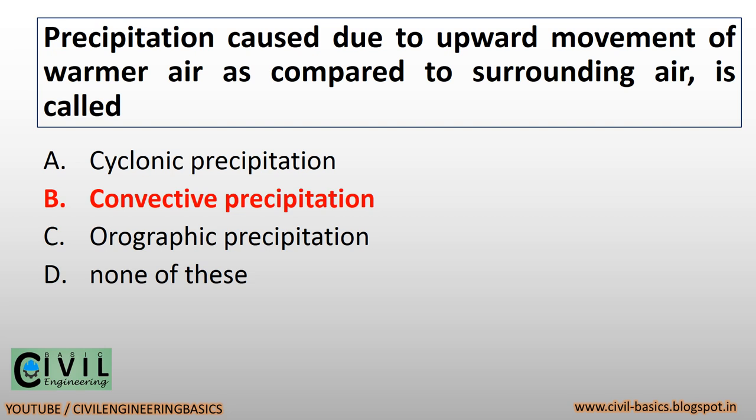Precipitation caused due to upward movement of warmer air as compared to surrounding air is called convective precipitation.